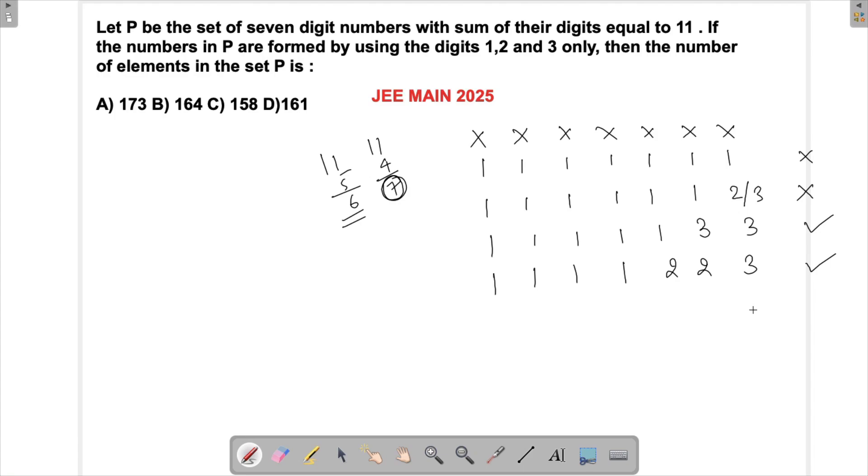With three ones: 11 minus 3 equals 8. Now I've got eight, which I can make using 2, 2, 2, 2. So this is also a possibility.